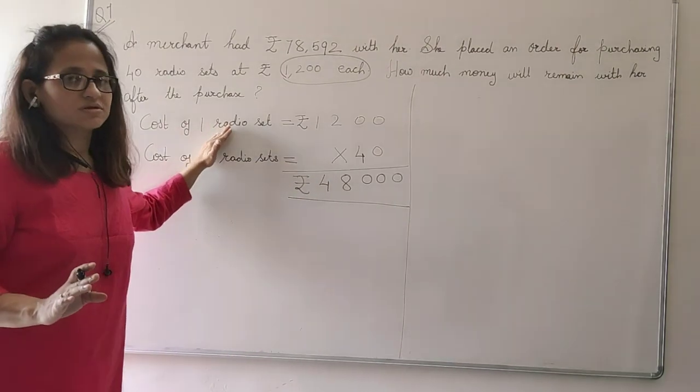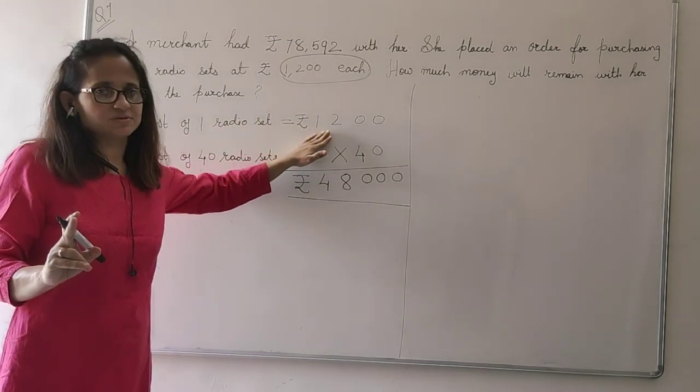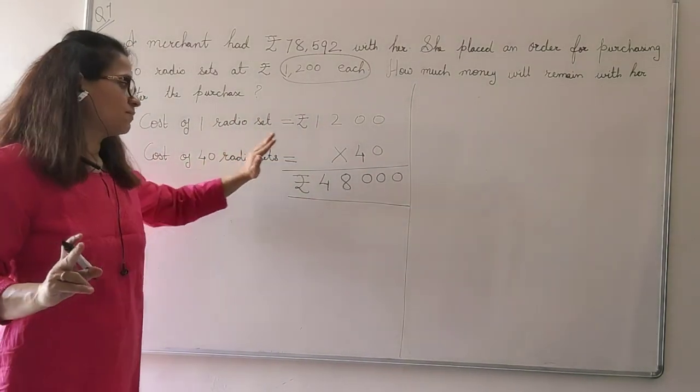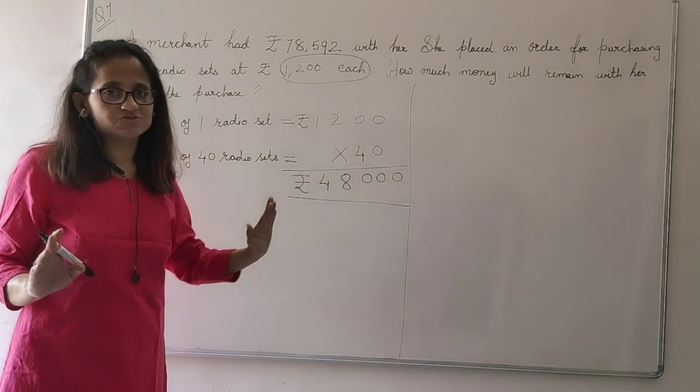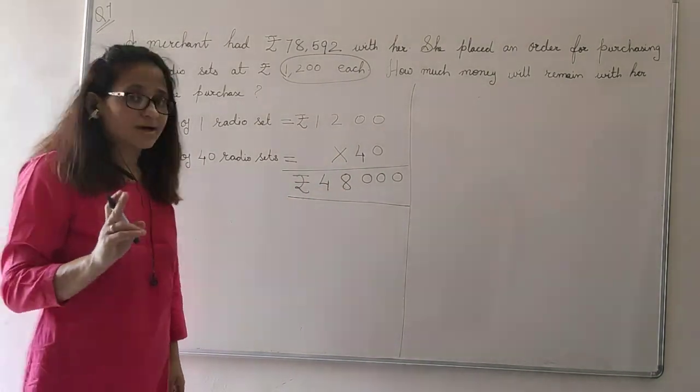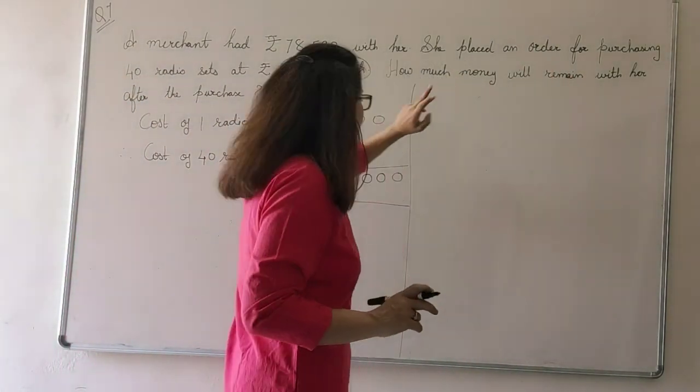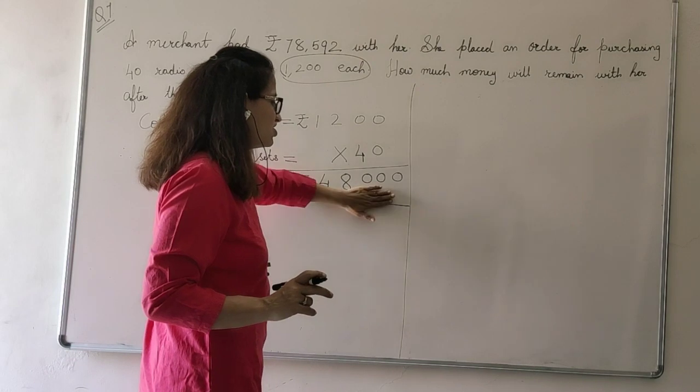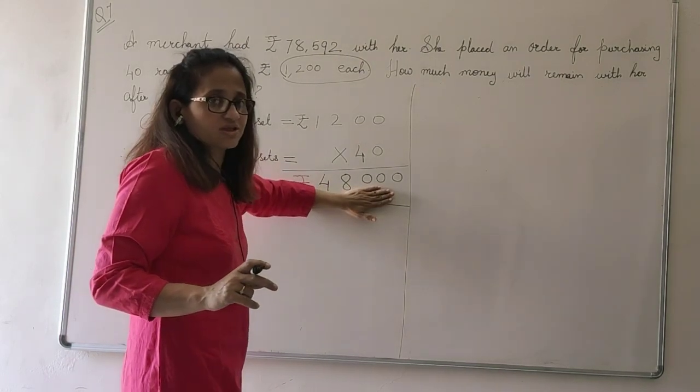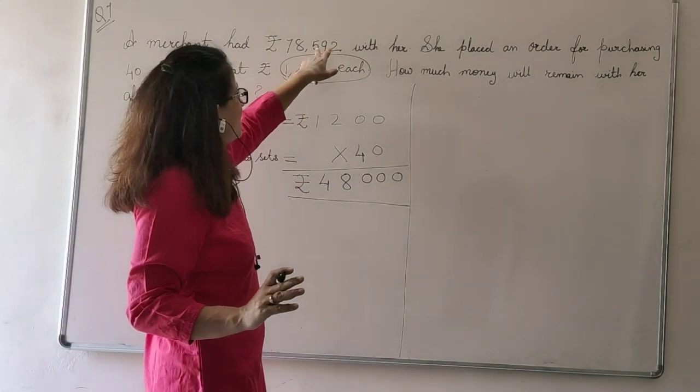First, the price of one radio set was given to us. We found the price of 40 radio sets. That is, we got 48,000. Now my question is, how much money will remain with her after the purchase? After she gave 48,000 for the radio sets, how much money is there with her? First, she had how much money?